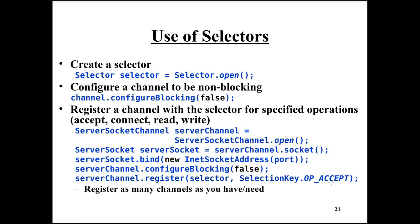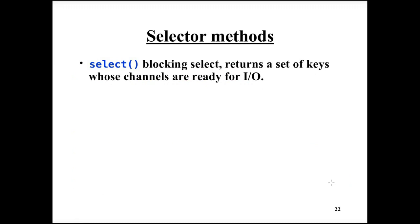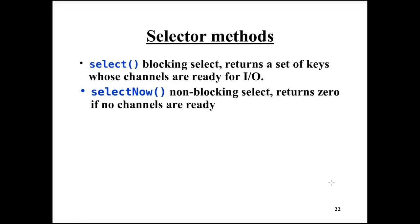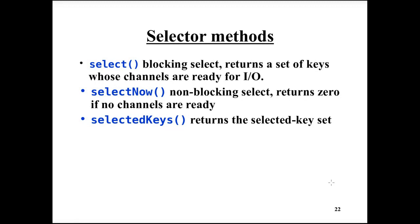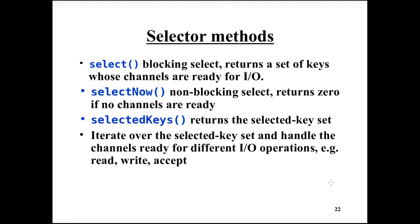We register the selector with all channels we are interested in — there should be only one selector for all channels. Then we call select, which returns as soon as one of the channels is ready for IO. The select method is blocking but returns immediately when one of the registered channels can perform one of the desired operations. There is also a selectNow method, which is non-blocking and returns immediately. Selected keys returns keys representing channels that are ready for non-blocking IO. After select returns we call selectedKeys to retrieve that set, then iterate over it to handle all channels ready for non-blocking IO.